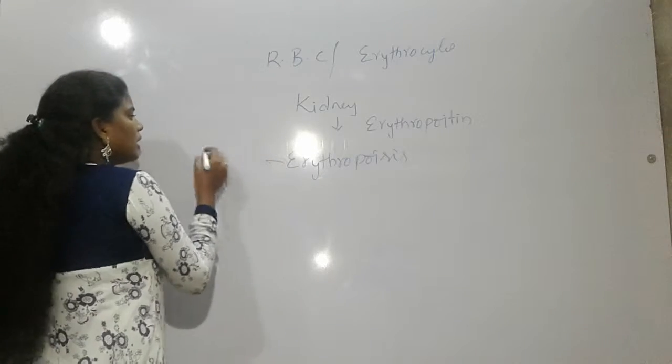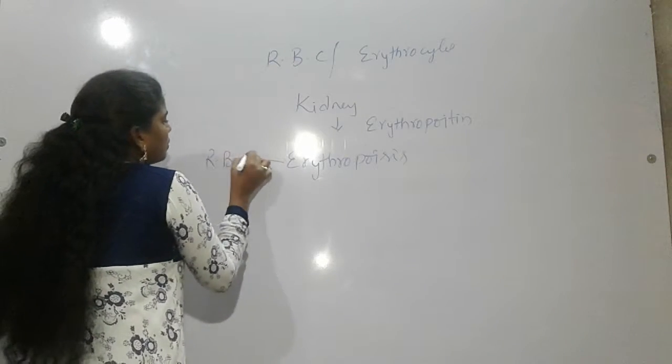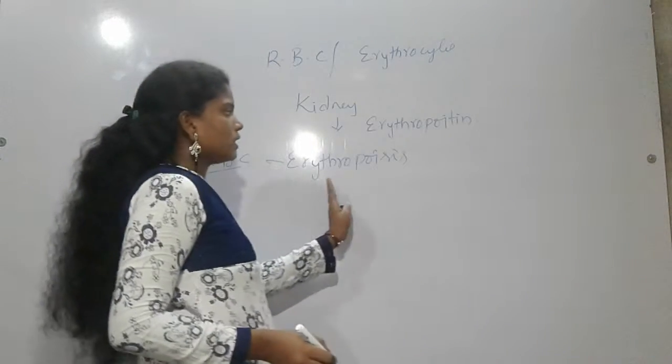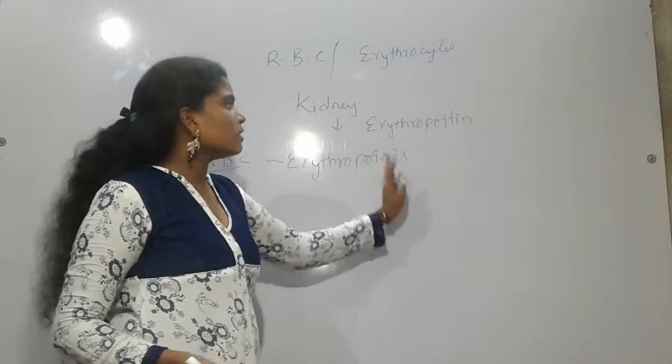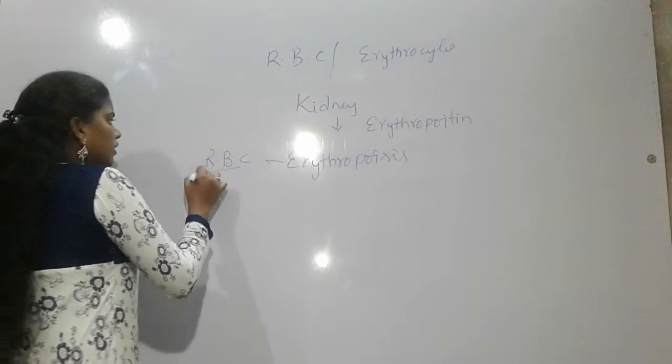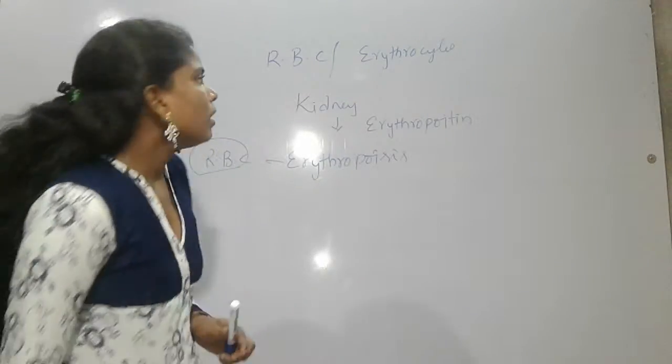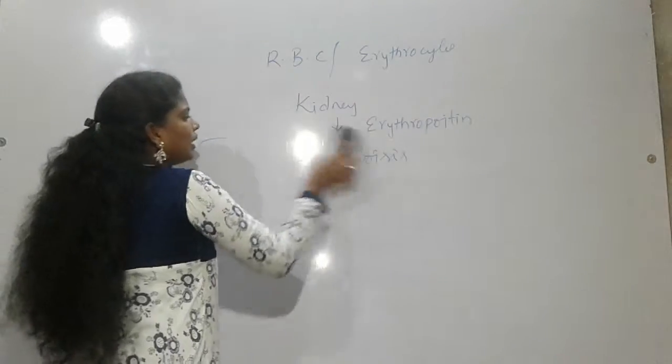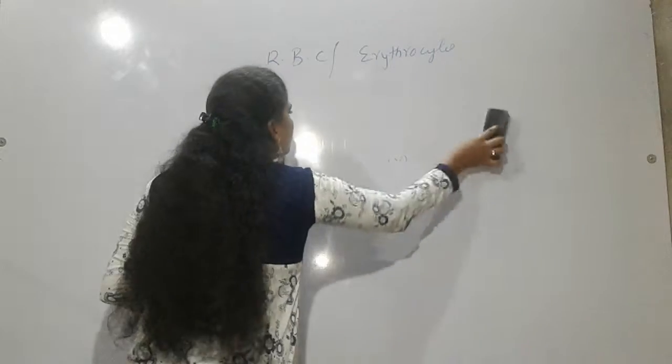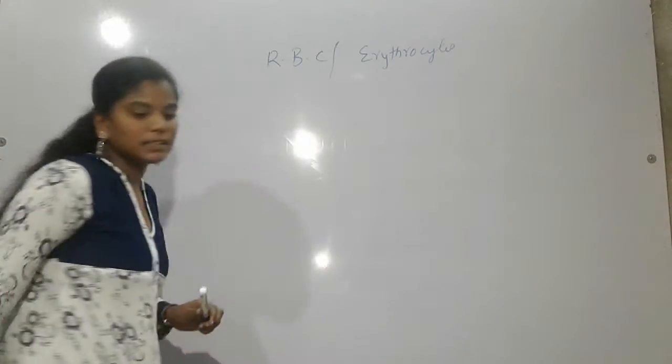This is nothing but formation of RBC. By the process of erythropoiesis, the formation of RBC occurred. That is the reason we are calling it as erythrocytes. In one ml of blood, how many of the RBC will be present?